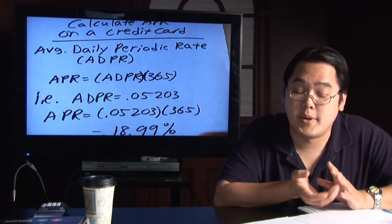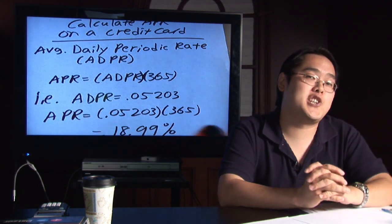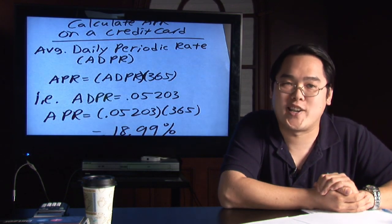But it can be lower and if you do bad things it can also be higher. My name is Jimmy Chang and that is how you calculate the APR on your credit card.